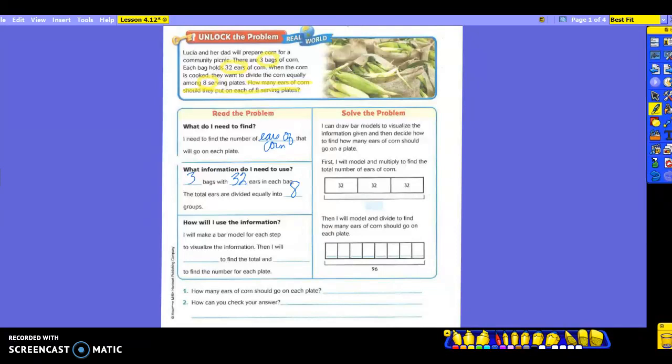So now we want to know how we're going to use the information. We are going to make a bar model for each step to visualize the information. Then I will multiply to find the total. So what am I going to do to find the total? How do I find totals? Multiplying. And it has it right here. Three bags with 32 ears in each bag would be a multiplication. So you're going to multiply to find the total. And then what are we going to do to find the number for each plate? Divide.